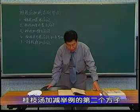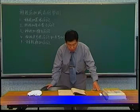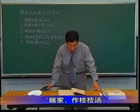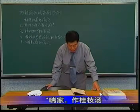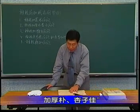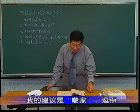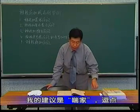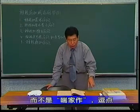桂枝汤加减举例的第二个方子，是桂枝加厚朴杏子汤。原文第十八条，喘家作桂枝汤，加厚朴杏子佳。这一条的断句，我的建议是喘家加豆底，而不是喘家作豆底，喘家作那是喘并发作，那喘并发作，那不一定用桂枝汤。